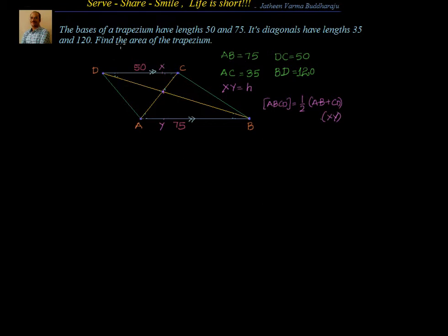The problem is we have been given a trapezium with the values of bases — the parallel sides — as 50 and 75. We also know the diagonals AC = 35 and BD = 120. We have to find out what is the area of ABCD.